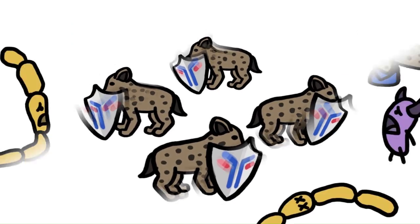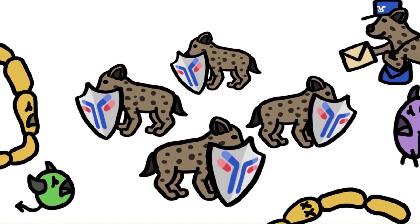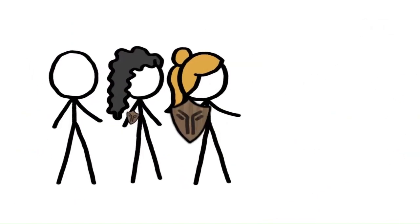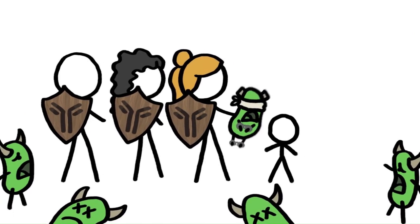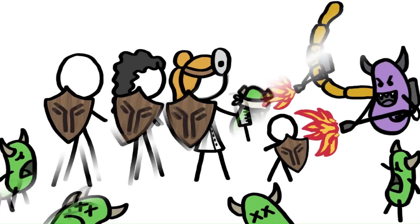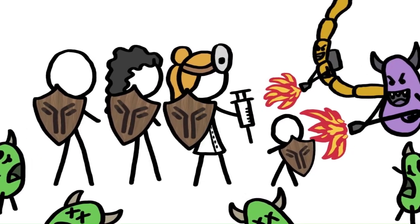Socializing can also give scavengers an immune boost. Hyenas and lions, for instance, likely pass small doses of germs around as they groom, eat, and compete with each other, which may help build up group-wide immunity to toxins like anthrax.